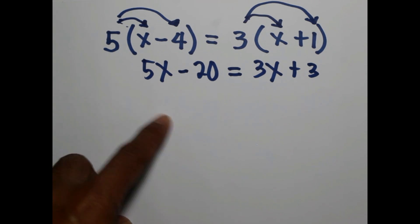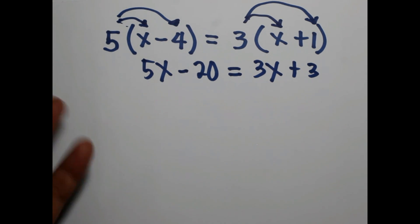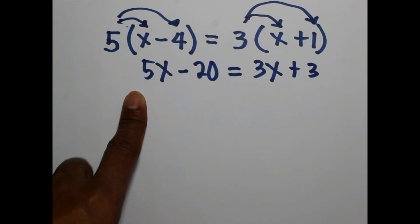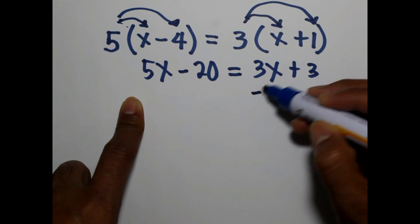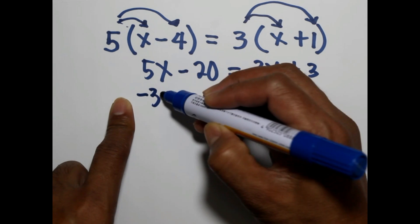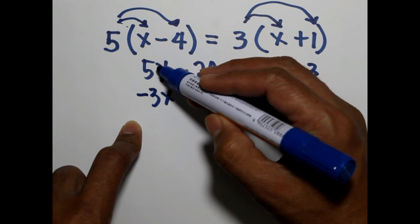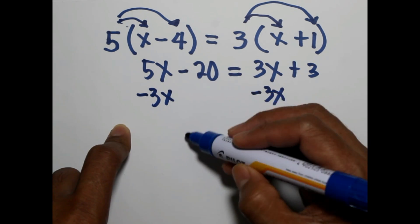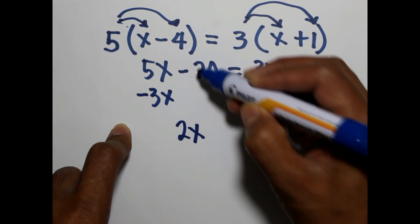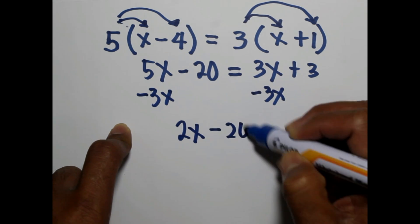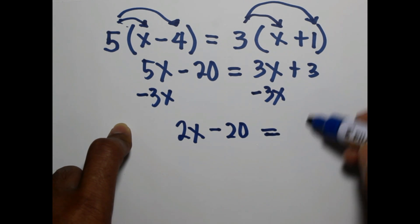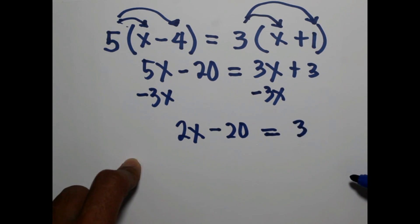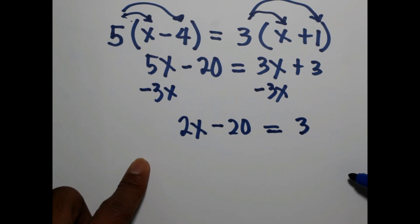Take note we will gather the x term on one side and the constant on the other side. In this case, we will gather the x term on the left side and constant on the right side by eliminating 3x. So we will subtract 3x from both sides. 5x minus 3x, that's 2x. Bring down negative 20 equals 3x minus 3x, that's 0, so bring down 3.